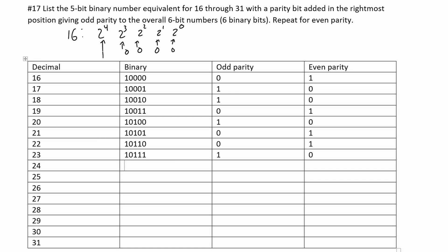For 24, we can say this is 16 plus 8. Starting from 20 (1 0 1 0 0), and adding 4 we get 1 1 0 0 0 — actually it's basically 16 plus 8, giving us 1 1 0 0 0. You just have to look at the previous binary ones and manipulate them. We do have an even number of ones, so we're going to have a 1 for our odd parity and a 0 for our even parity.